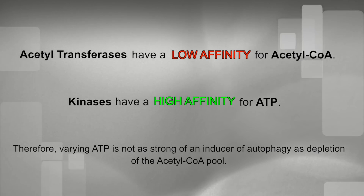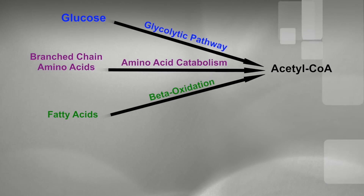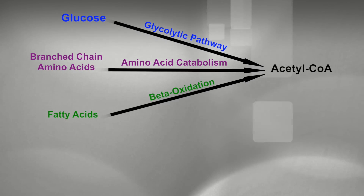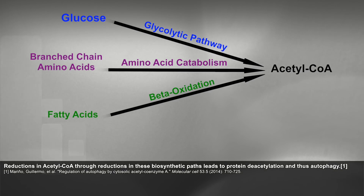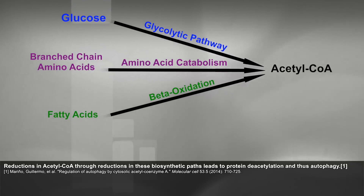Since acetyl-CoA is built in the degradation of glucose — the glycolytic pathway from pyruvate — or in the catabolism of branched-chain amino acids, as well as a final product of beta-oxidation, all major nutrients actually supply acetyl-CoA as an end product. Taking away glucose, amino acids, or fatty acids causes a reduction in the cytosolic acetyl-CoA pool, which leads to deacetylation of hundreds of different cellular proteins, and hence a multipronged induction of major sub-pathways of the autophagic process.